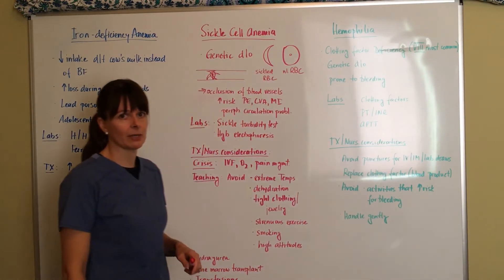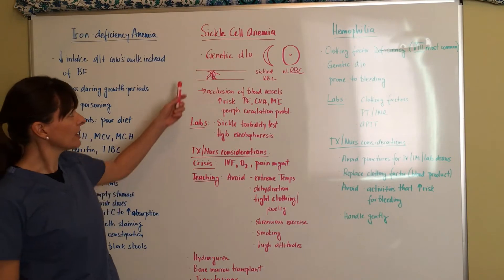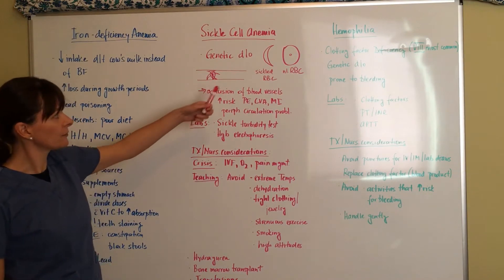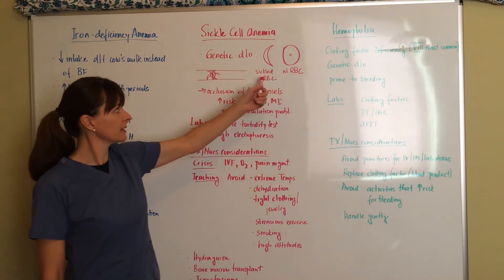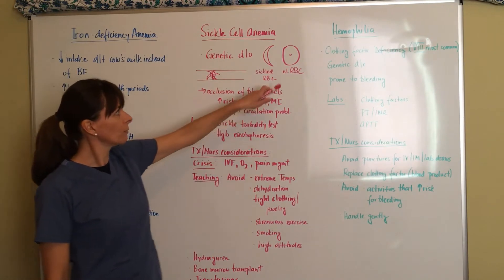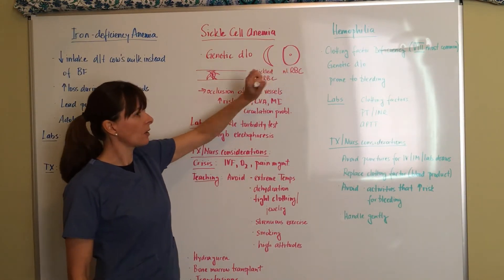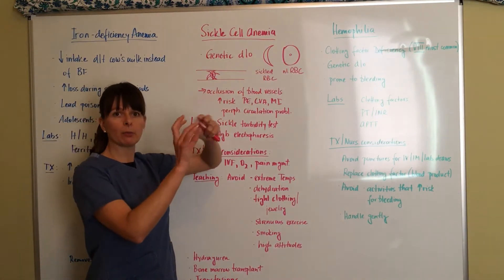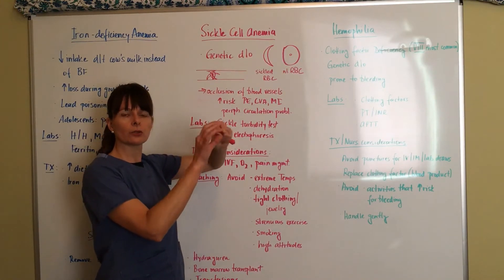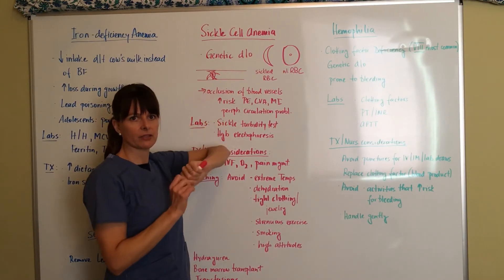Moving on to sickle cell anemia. Sickle cell anemia is a genetic disorder and I've drawn out the normal red blood cell and the sickled blood cell. A normal red blood cell is nice and round and very pliable. It's able to fit through tight spaces and blood vessels.